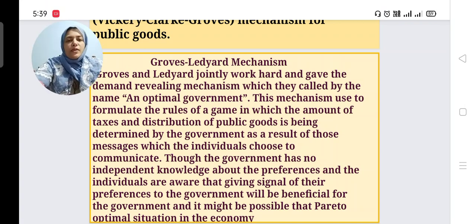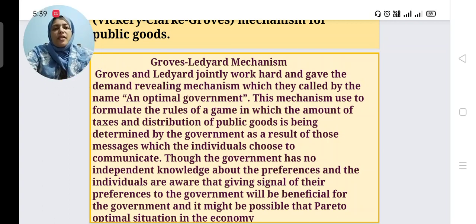Good morning. Now we can discuss the next theory, that is the Groves-Ledyard mechanism. Groves and Ledyard jointly worked hard and gave the demand revealing mechanism which they called by the name an optimal government.